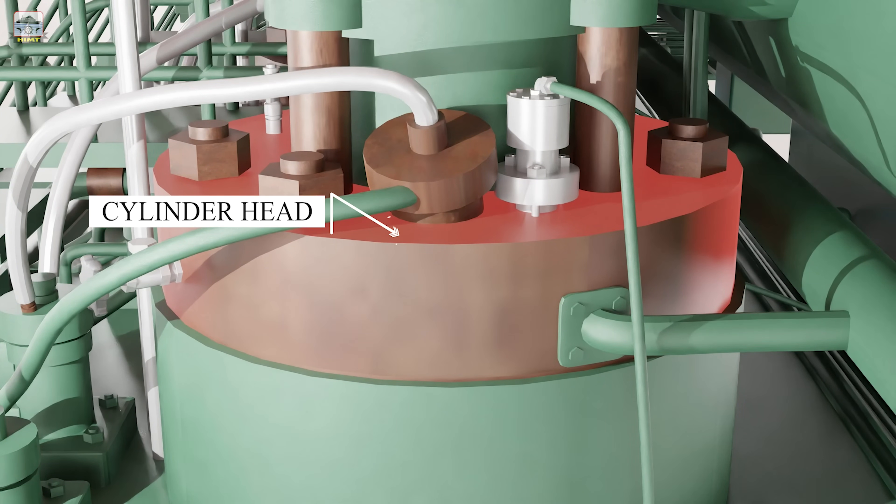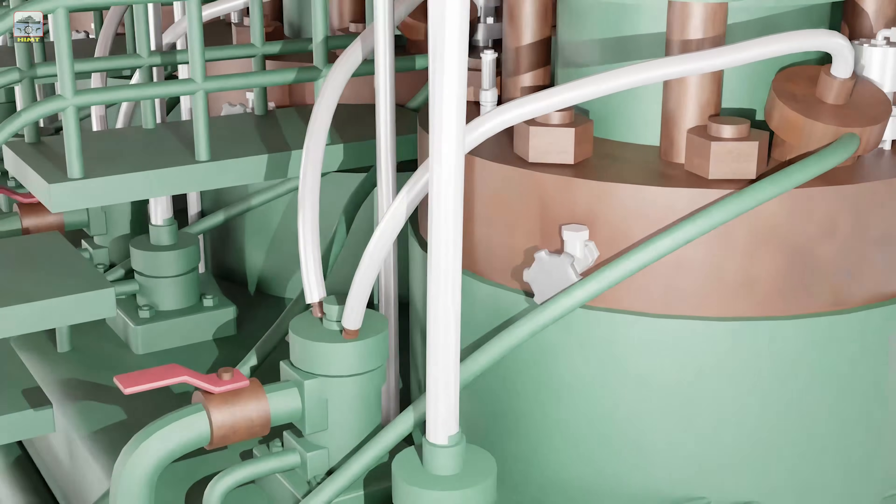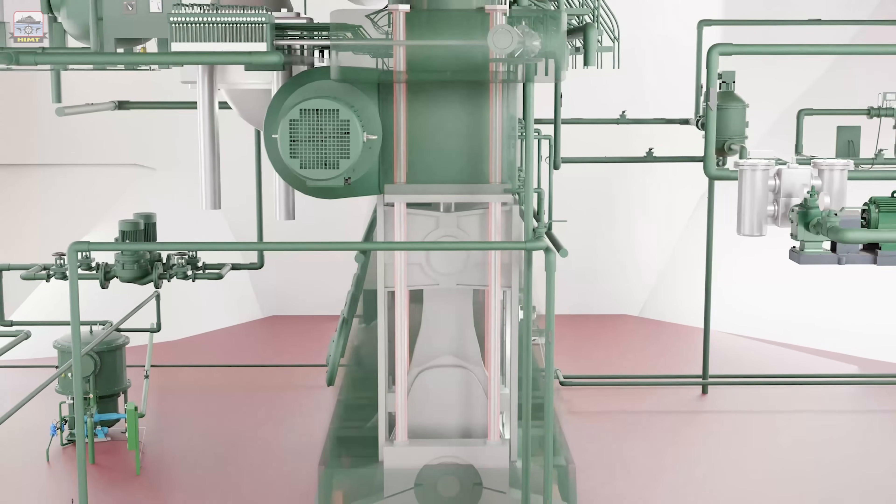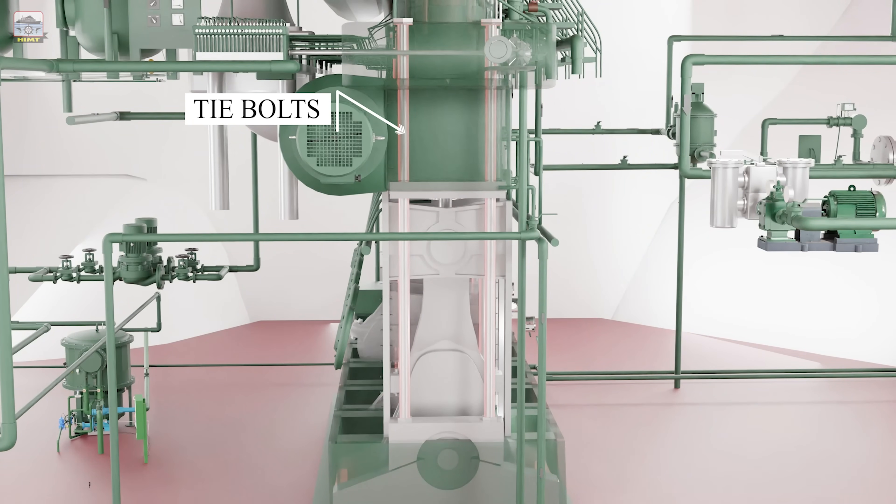The cylinder head rests on the liner and is secured with the cylinder block using nuts and studs. The tie bolts keep the bed plate, the A-frame, and the cylinder block together.